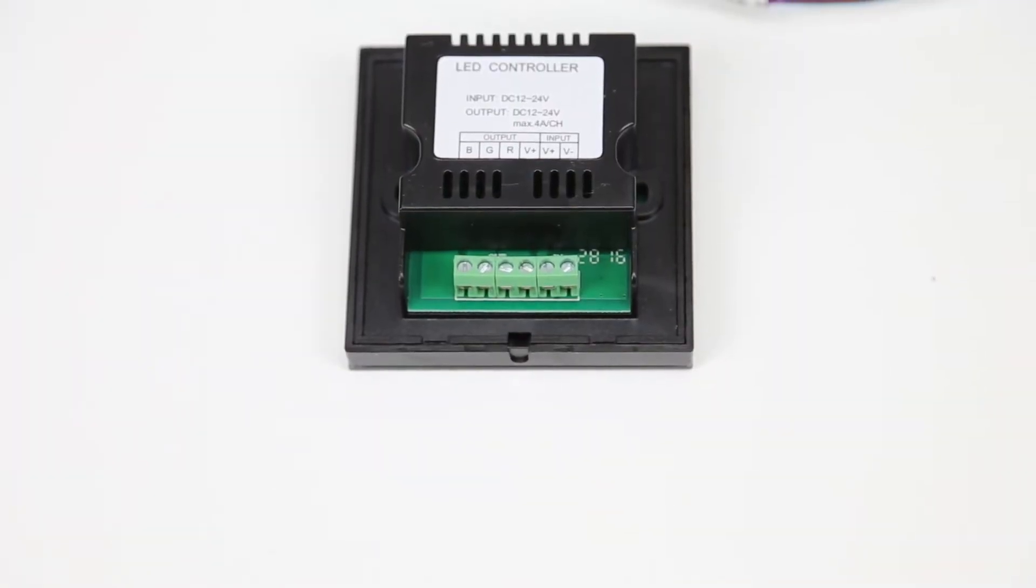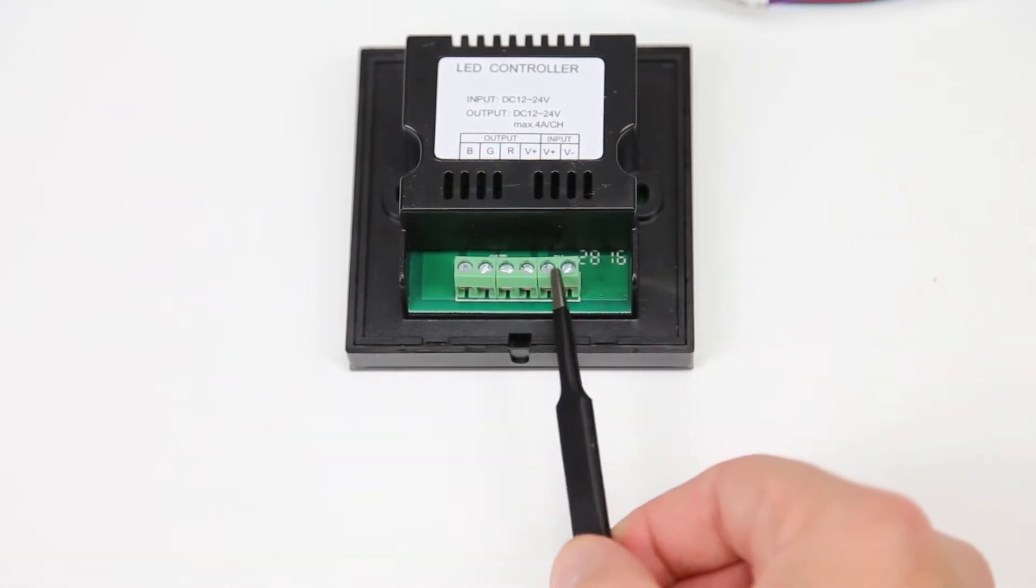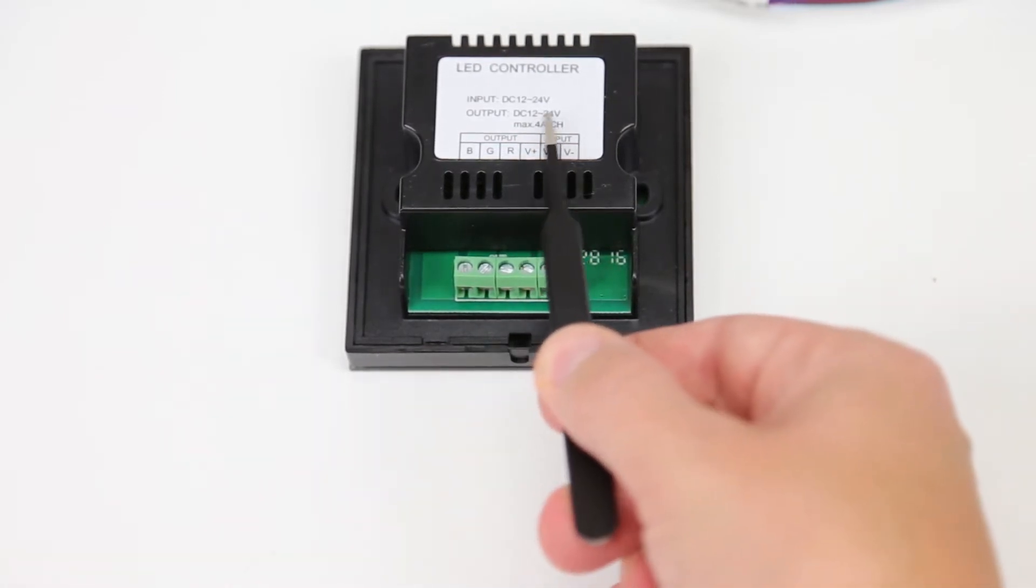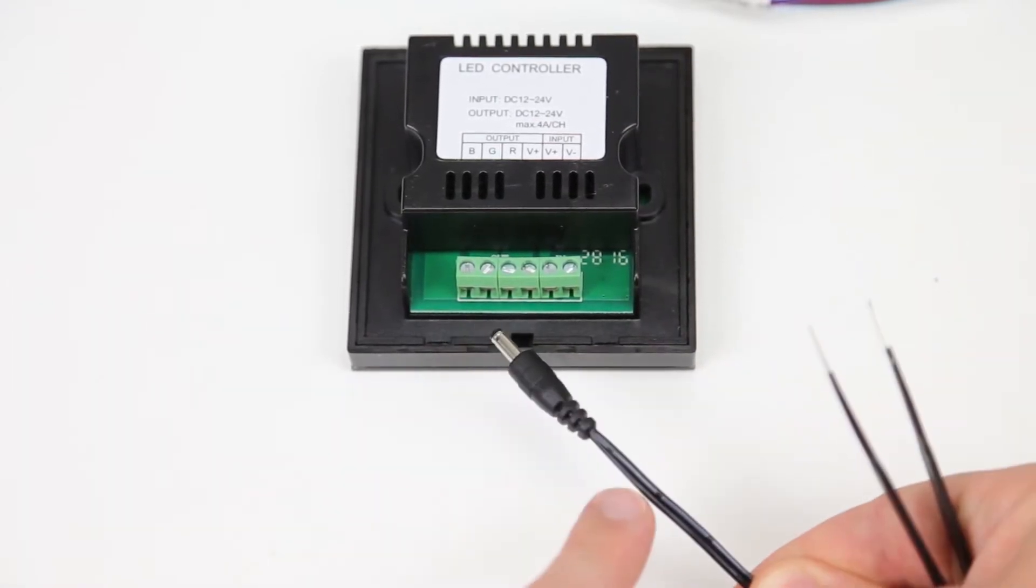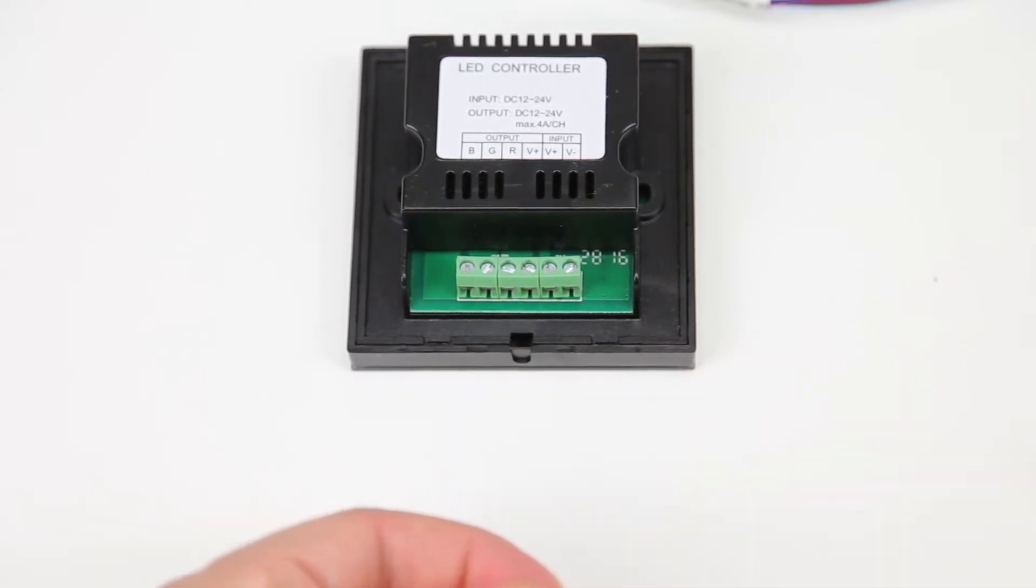Next up we take our LED controller. On the back side here we are going to plug in the power supply on the V plus and V minus inputs. We can use 12 to 24 volts. The included one that we got, we can actually cut off this part here. So the dotted one is usually positive but make sure you check the polarity first.